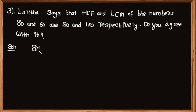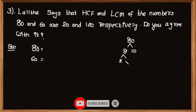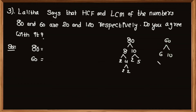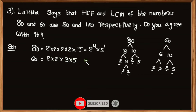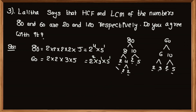The given numbers are 80 and 60. 80 can be factorized as 2 multiplied by 2 multiplied by 2 multiplied by 2 multiplied by 5, that is 2 to the power 4 multiplied by 5 to the power 1. And 60 can be factorized as 2 multiplied by 2 multiplied by 3 multiplied by 5, that is equal to 2 squared multiplied by 3 to the power 1 multiplied by 5 to the power 1.